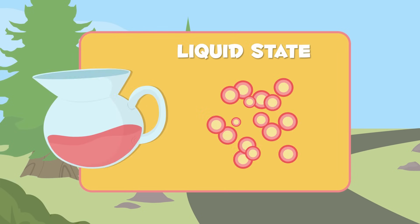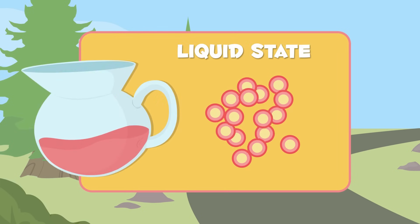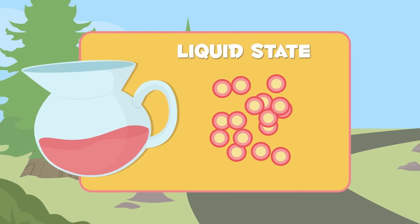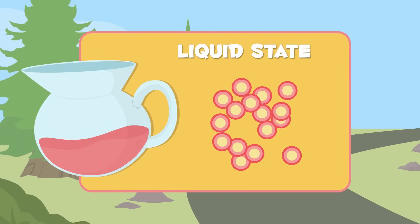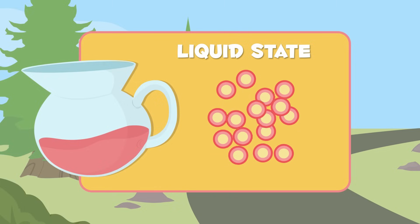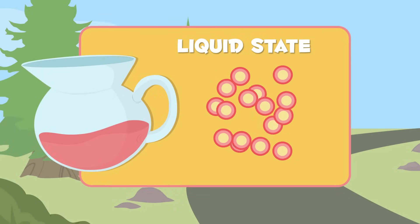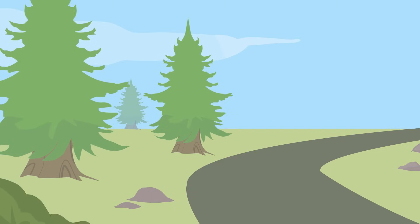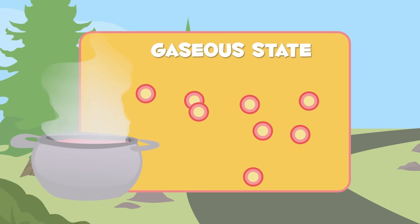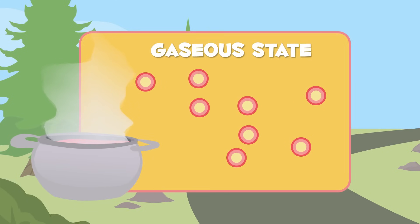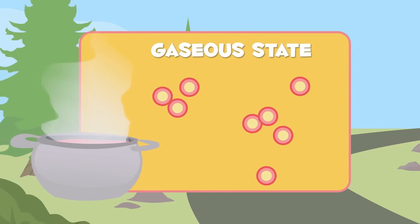Liquid matter takes on the shape of its container, occupying always the same space. Besides, particles are separated and can move freely. Gas matter doesn't have a fixed shape or volume. Its particles are well separated and can move freely.